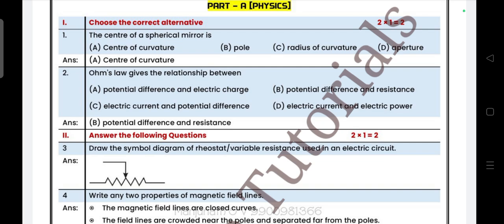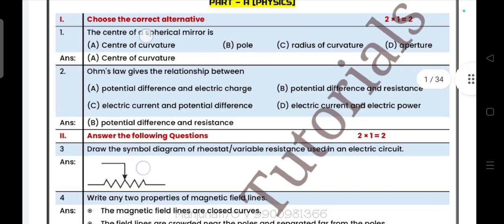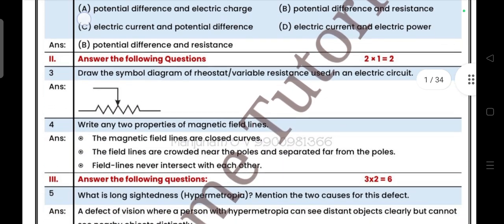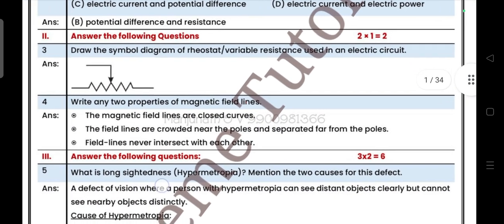Let's get started. First main physics part, Part A Physics, two multiple choice questions each carries one mark. In blue part it is the question, in white part this is answer. First question: the center of spherical mirror is called, answer is center of curvature. Ohm's law gives the relationship between, answer is B, potential difference and resistance.